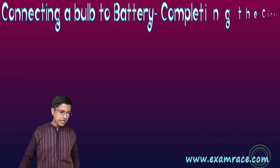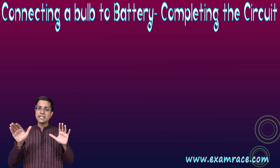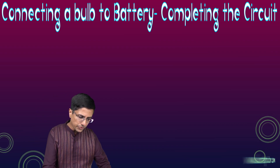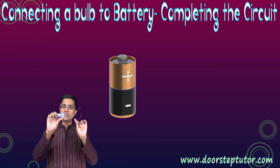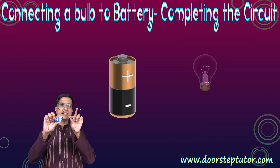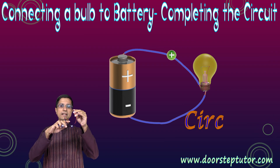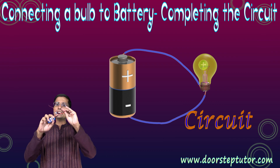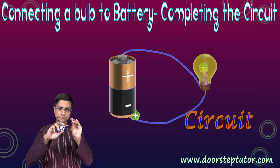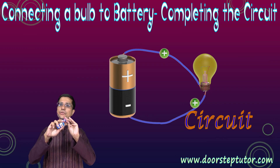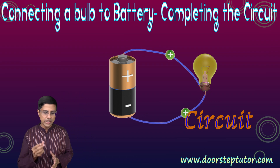Now that we have studied the two basic electrical components, we can put them together. Here is an example — I am putting them together right in front of you. This is a battery; one end is connected to one end of the bulb, and the other end of the battery is connected to the other end of the bulb. As soon as I do that, the bulb lights up. You should definitely try this at home using a battery to light a bulb.